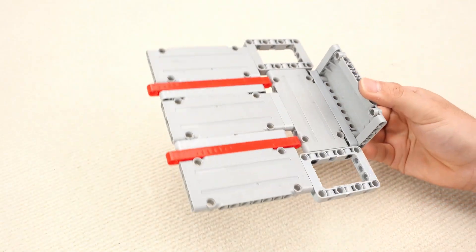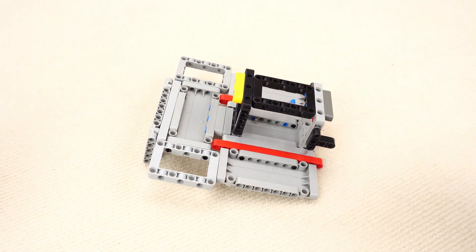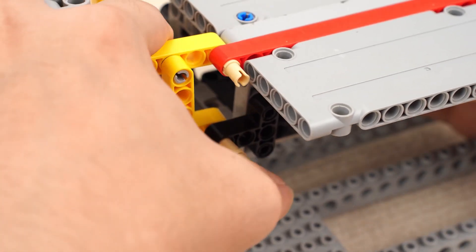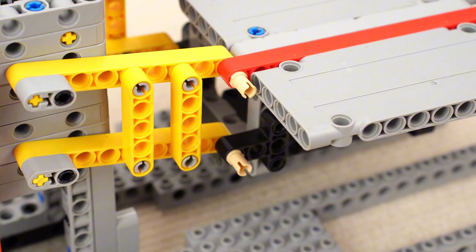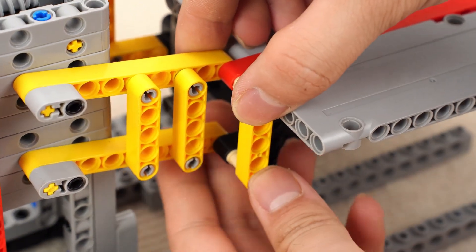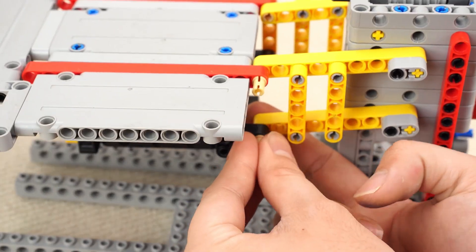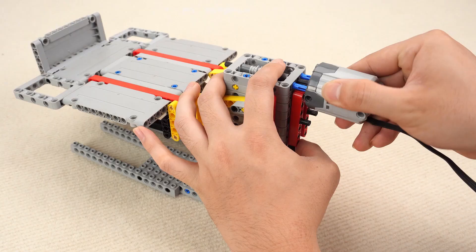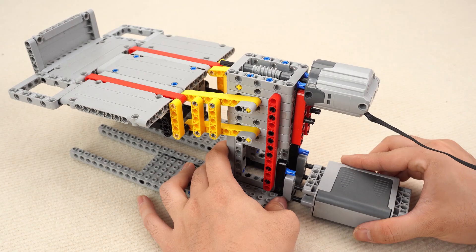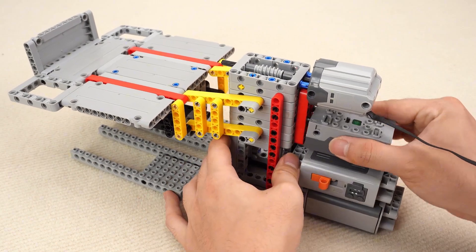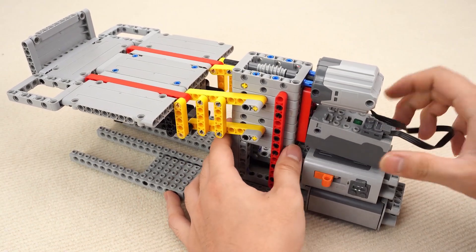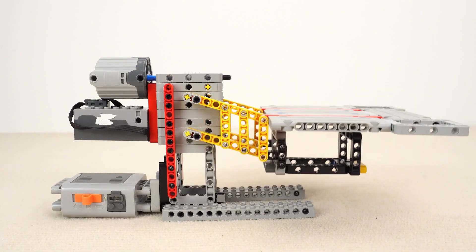Next up, the lifting platform. Attach it to the main frame. The motor and control unit go in the back. Done!